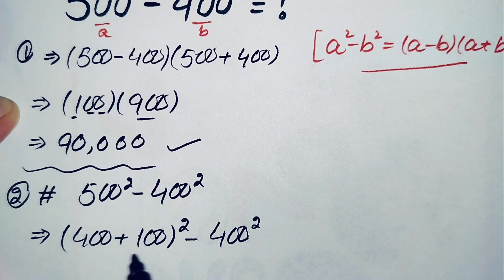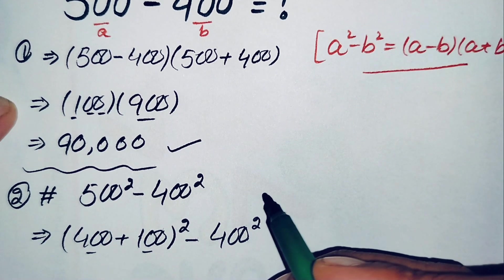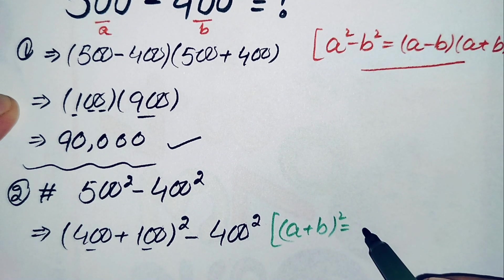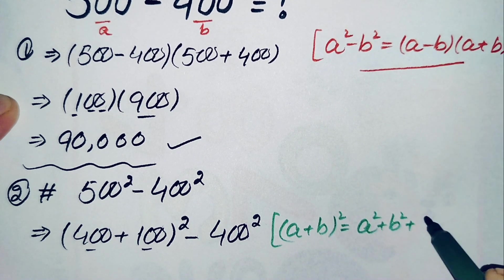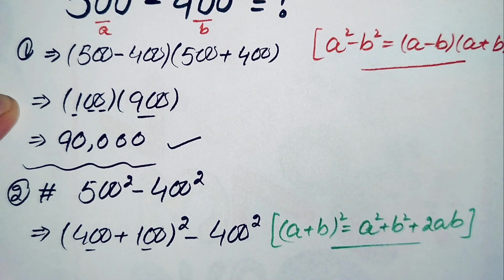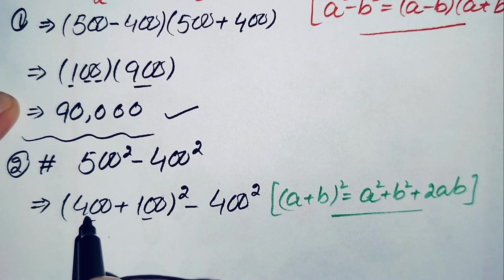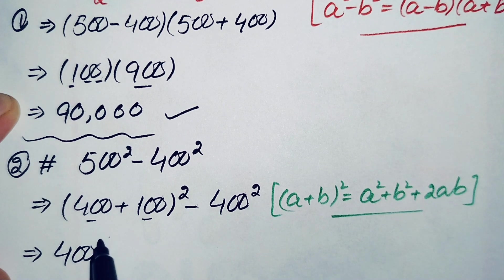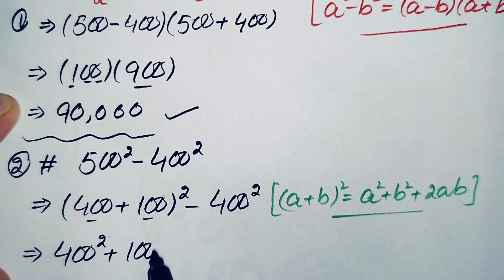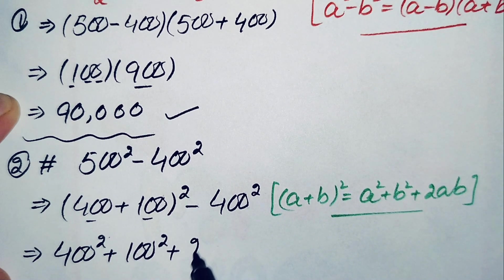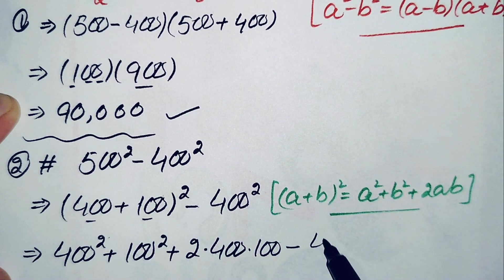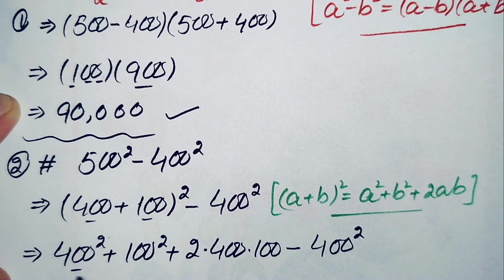So we can write this as (400 plus 100) whole squared minus 400 squared. Here we will use the algebraic identity (a plus b)² = a² + b² + 2ab. With a equal to 400 and b equal to 100, this becomes 400² plus 100² plus 2 times 400 times 100, minus 400².